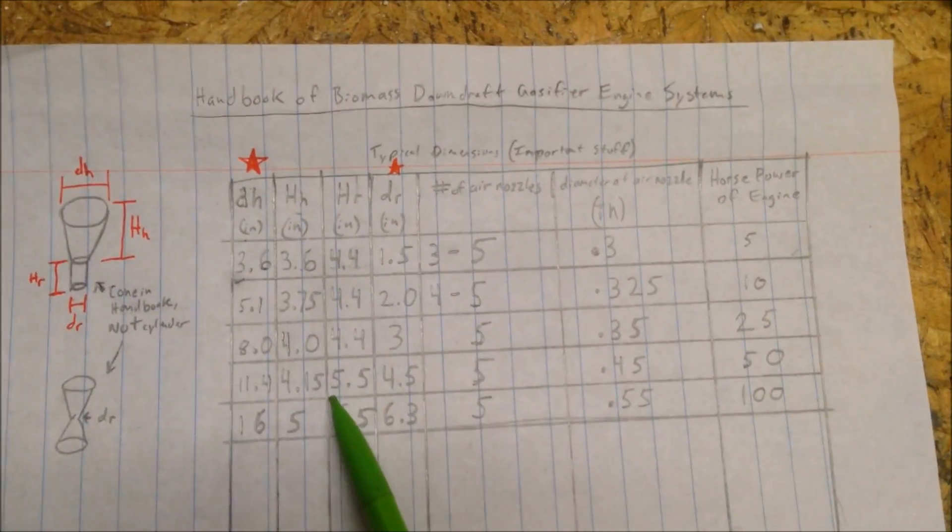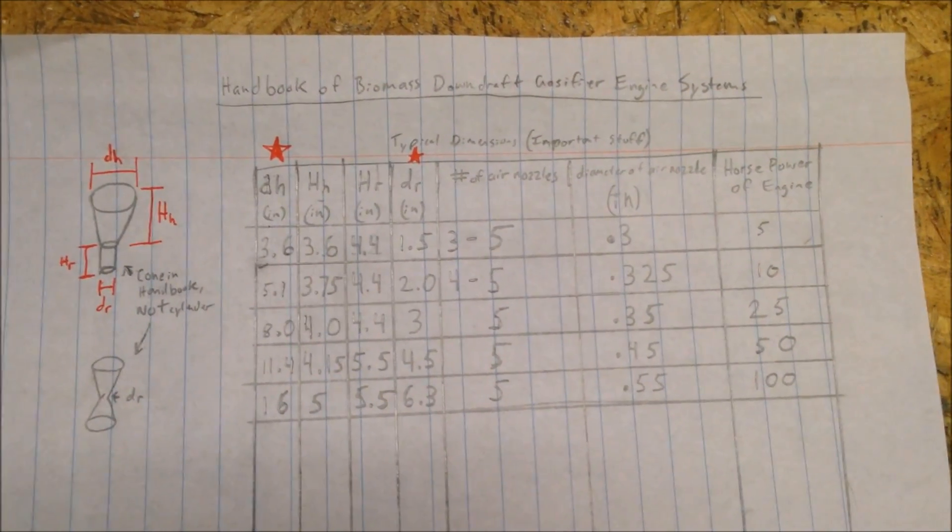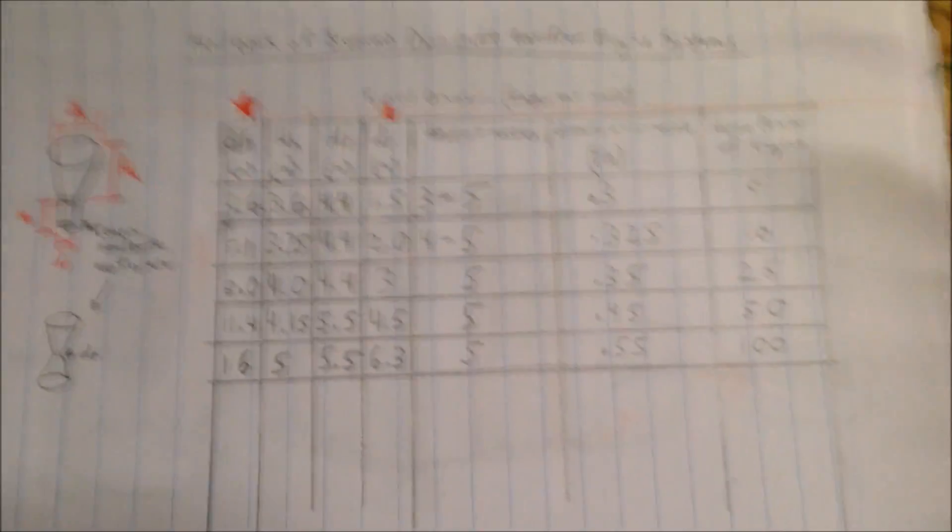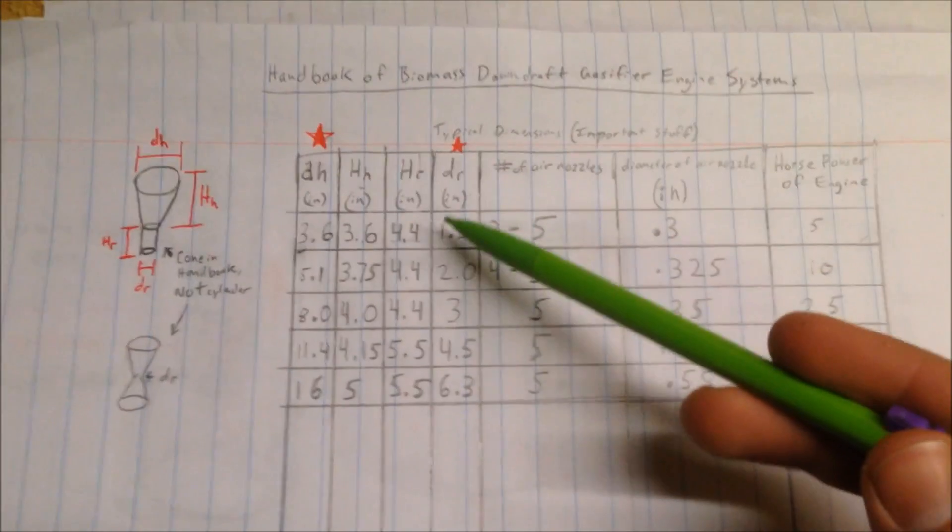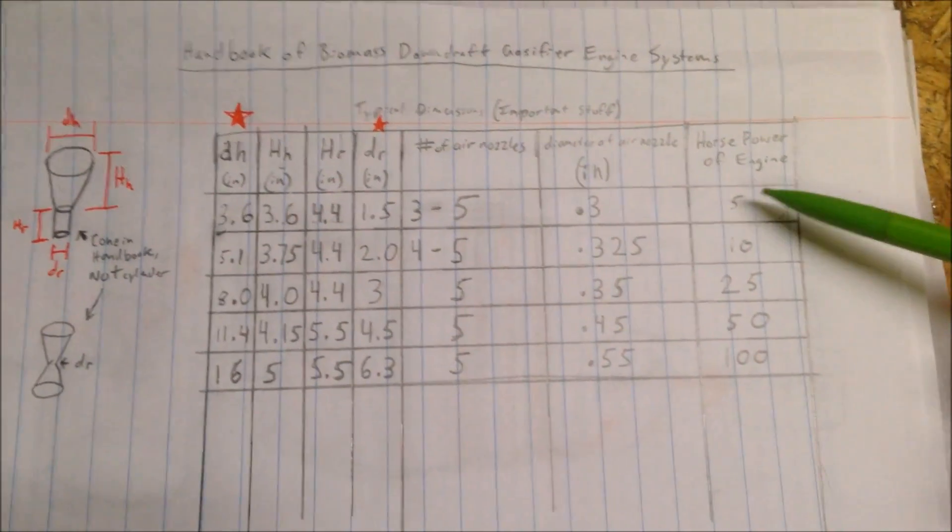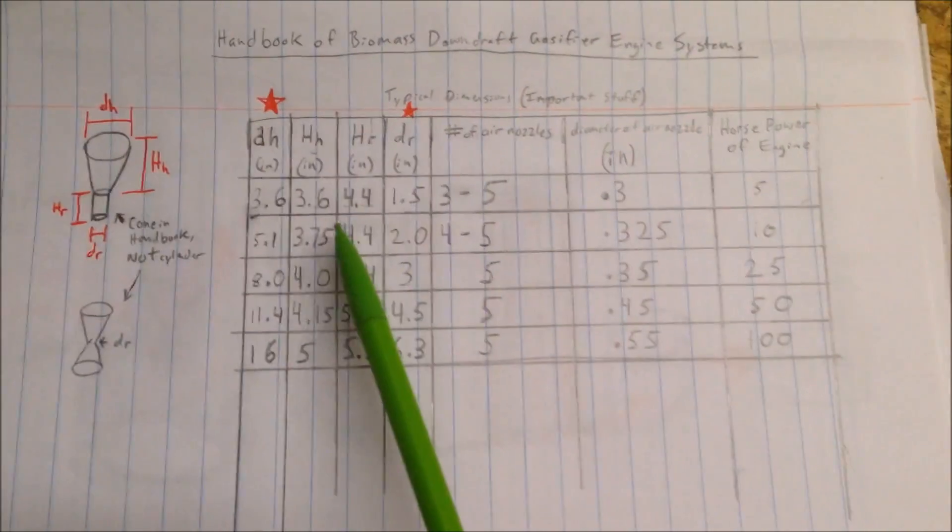So now this is the important part. This is what I've had trouble finding everywhere on the internet, and if I were you I'd pause this video and take a good look at this right here. This is directly from the Handbook of Biomass Downdraft Gasifier Engine Systems, the FEMA handbook as everyone calls it, and these are the measurements that I found to be most important when building a gasifier.